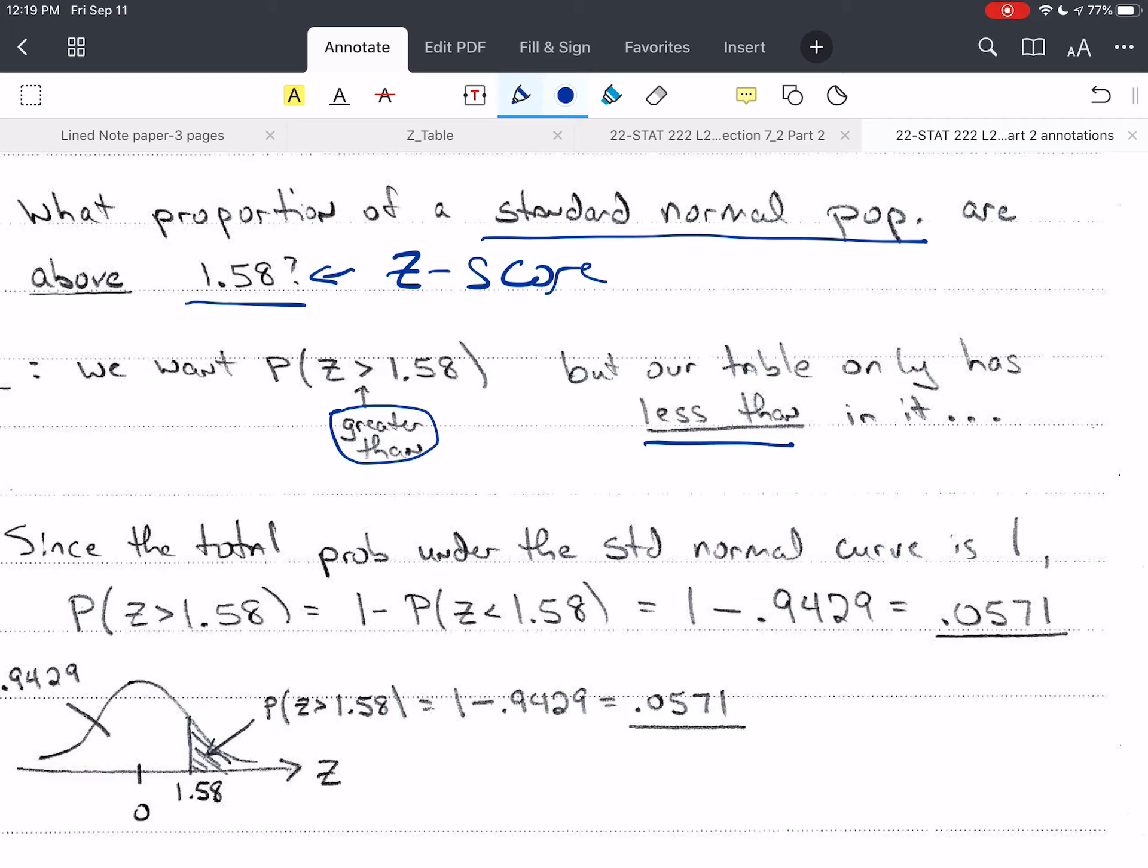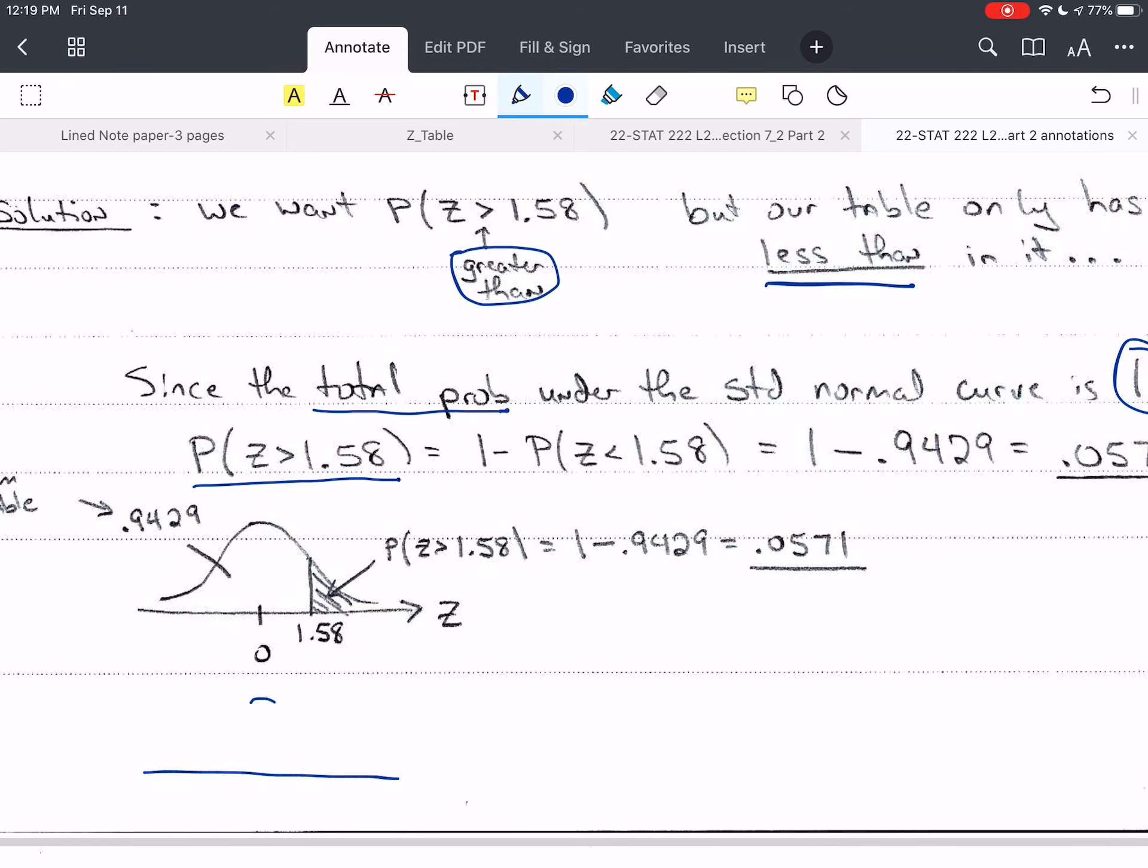So we have to use a property of the probability distribution, and the total probability under the standard normal curve is 1. So we're going to use what we call the complement or a complement rule, and I think I briefly discussed that back in chapter 5, that brief section on chapter 5 that we covered. So I'm looking for the probability that z is greater than 1.58. Now if I look at my standard normal curve, remember that the mean is 0 for this. Make sure you put a z over here, so that we know you're talking about the z and not something else.